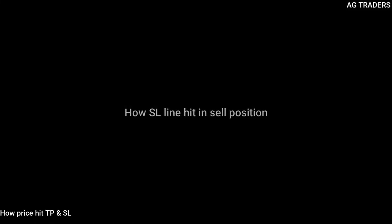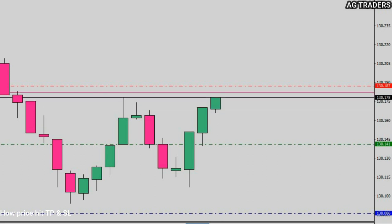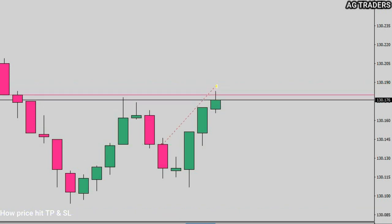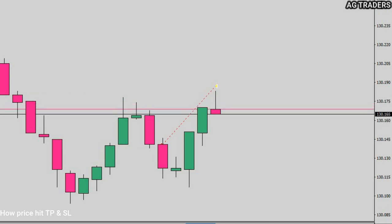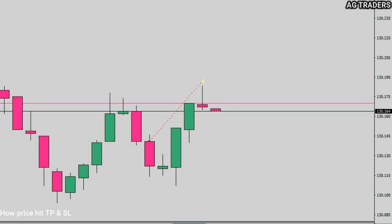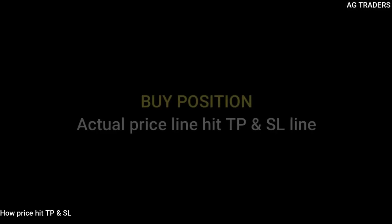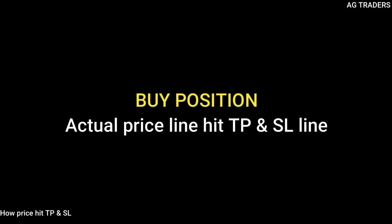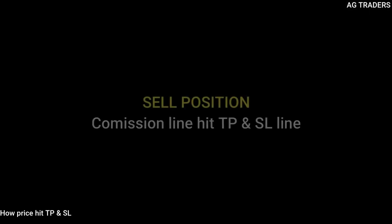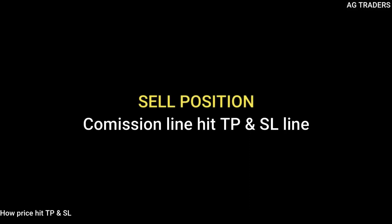In a sell position, the commission line will also hit your SL line. To summarize: in a buy position, the actual price line hits both TP and SL. In a sell position, the upper line or commission line hits your SL and TP.